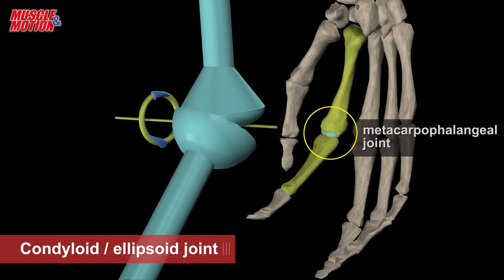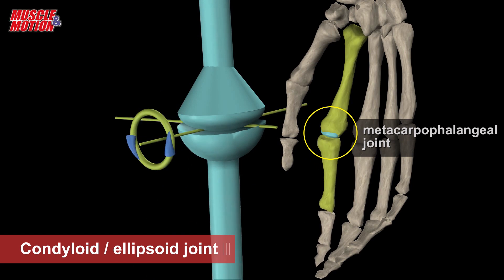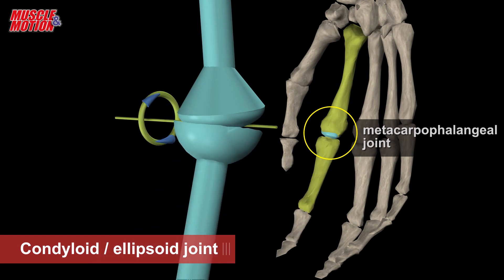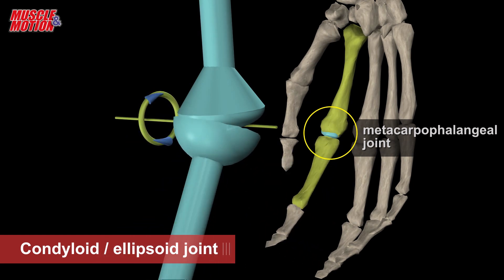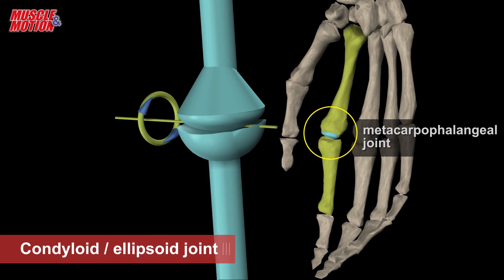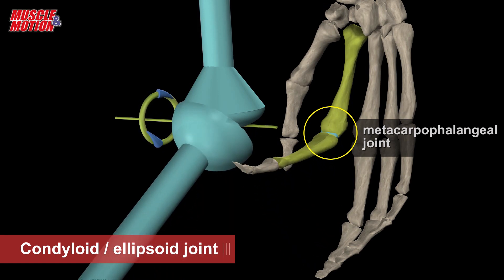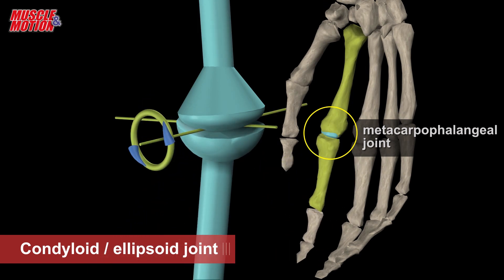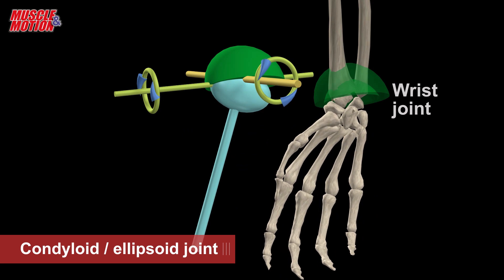Condyloid contains a convex surface which articulates with a concave elliptical cavity. They are also known as ellipsoid joints. For example, the metacarpal phalangeal joint and wrist joint.